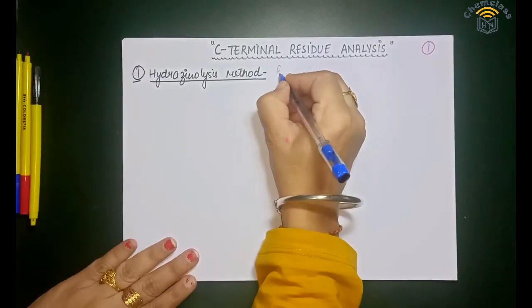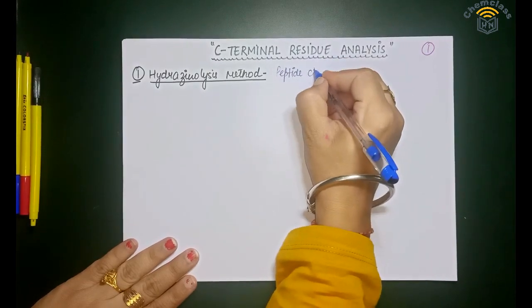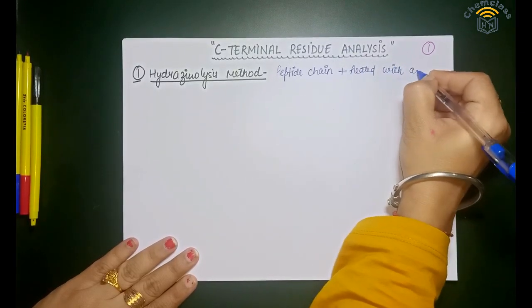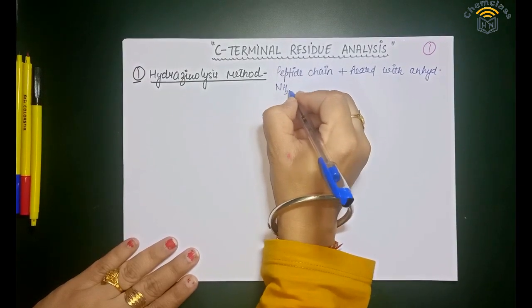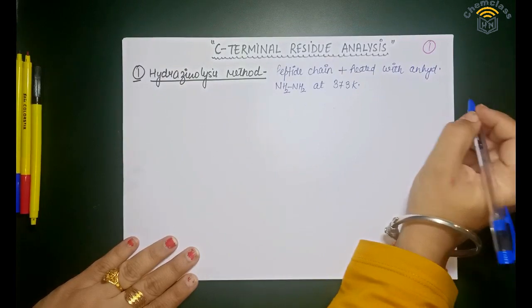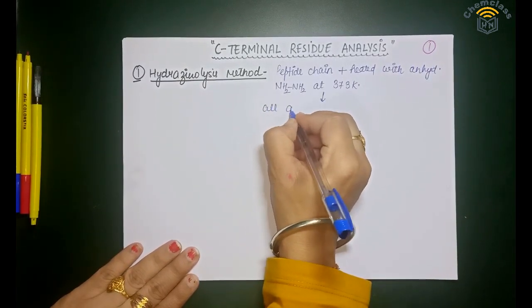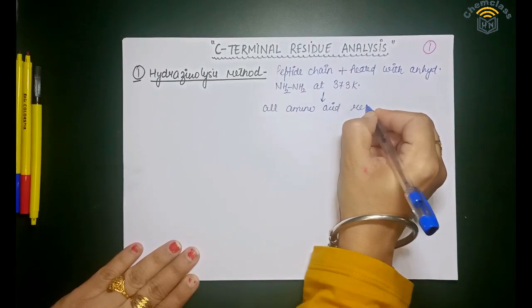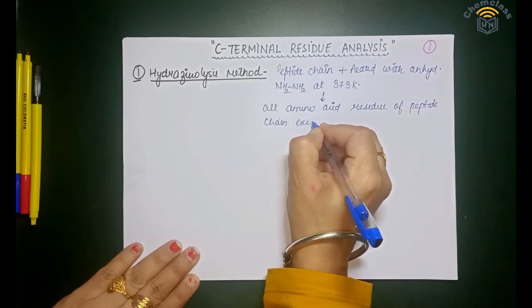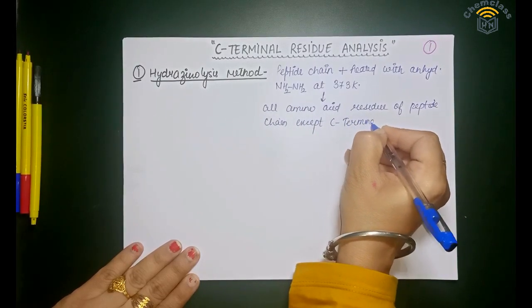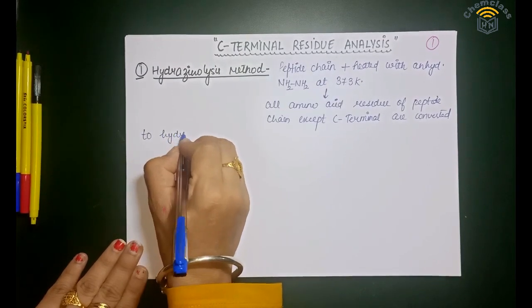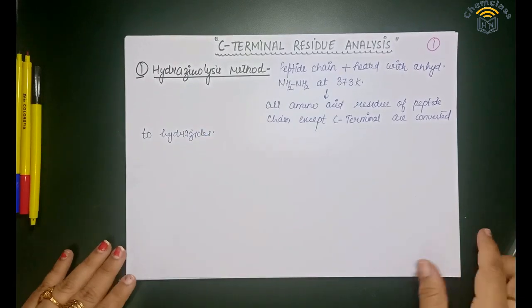In the Hydrazinolysis method, we take a peptide chain and heat it with anhydrous hydrazine — NH2-NH2 — at 373 Kelvin. What happens is that all the amino acid residues of the peptide chain, except the C-terminal residue, are converted to hydrazides.